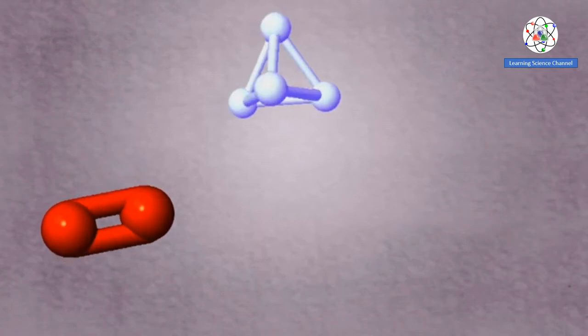This allotropism also exists in other elements, such as oxygen, phosphorus, and sulfur.